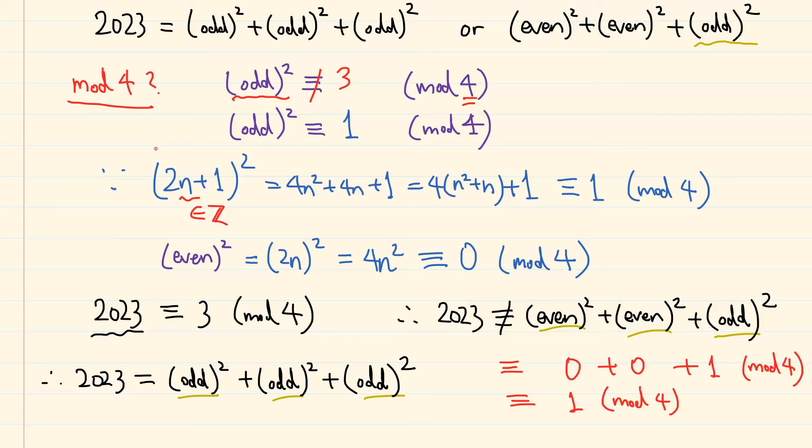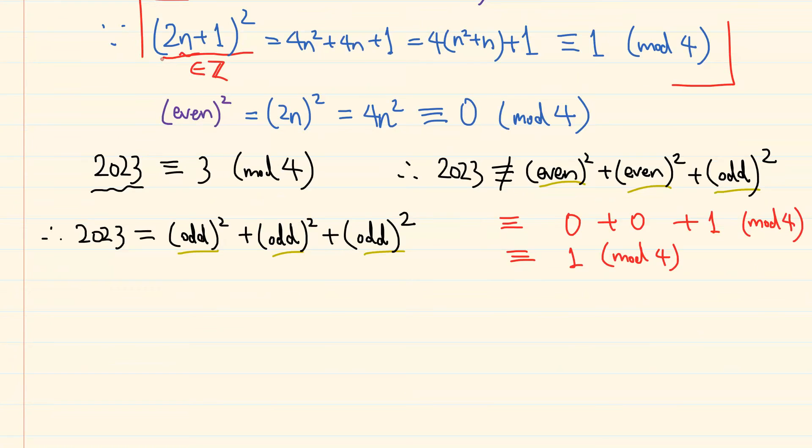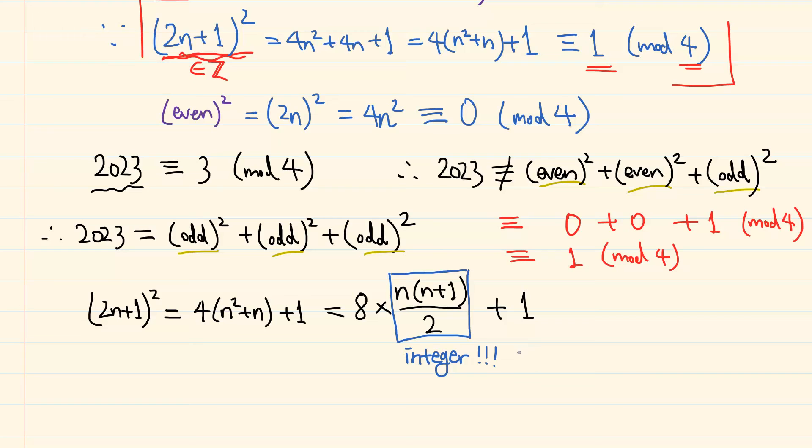Now, where can we go from here? Well, let us take a look at this part again, the square of an odd number. We have shown that this number gives the remainder 1 when divided by 4, but actually, this can be expressed as 8 times (n(n plus 1) over 2) plus 1. Here, this part is an integer, because one of n and n plus 1 is surely even. Therefore, this number is congruent to 1 modulo 8.